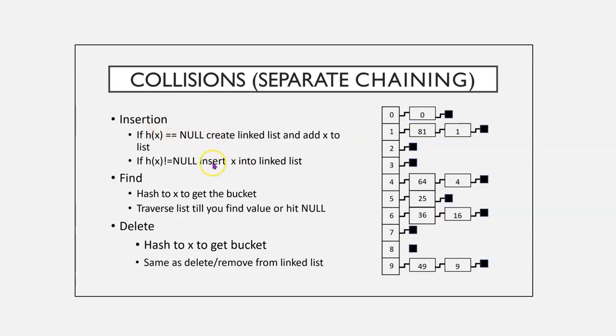So, what's the basic algorithm? If x equals null, we'll create the linked list and add x to the list. If x doesn't equal null, we'll insert it into the list. How do we find it? We hash to x and then traverse the list until we find it or get null. To delete, we hash to x to get the bucket, and then you remove it from the linked list. So, it's pretty straightforward there.